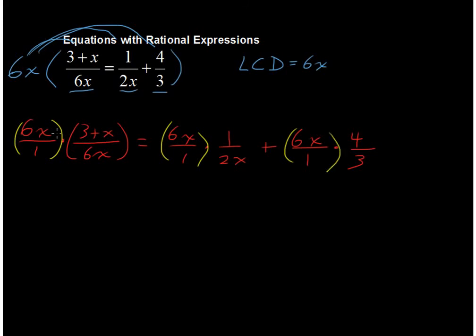Now, the reason we do that is because every single denominator is going to cancel out. So I'll show that real quickly. The 6x's cancel out completely, so we're just left with 3 plus x and then equals.